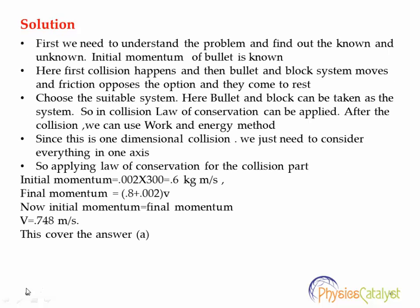The first step is to understand the problem and identify the known and unknown quantities. The initial momentum of the bullet is known. The collision happens first, then the bullet-block system moves while friction opposes the motion until they come to rest. We choose the bullet and block as our system. In the collision, the law of conservation of momentum can be applied. After the collision, we use the work-energy method. Since this is a one-dimensional collision, we only consider motion in one direction.